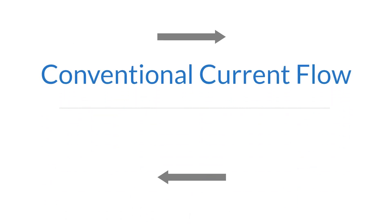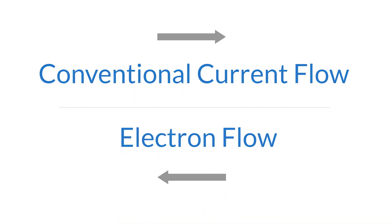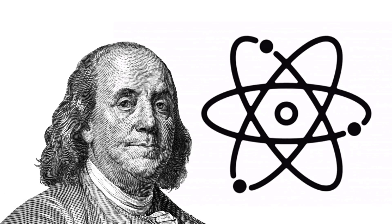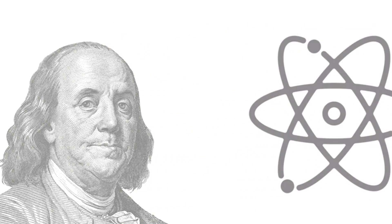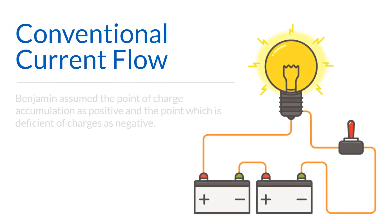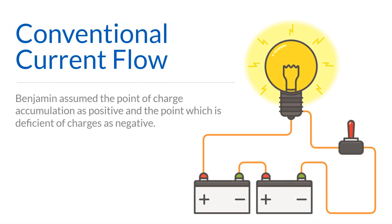When discussing current, the direction of flow needs to be considered. There are two theories behind current flow: conventional current flow and electron flow. When Benjamin Franklin was studying charges, the structures of atoms and atomic particles were unknown. Benjamin assumed the point of charge accumulation as positive and the point deficient of charge as negative. Therefore, charge is said to flow from positive to negative. This is called conventional flow.